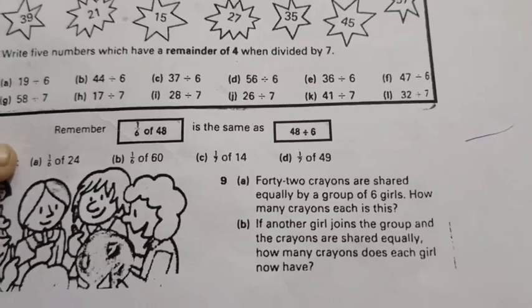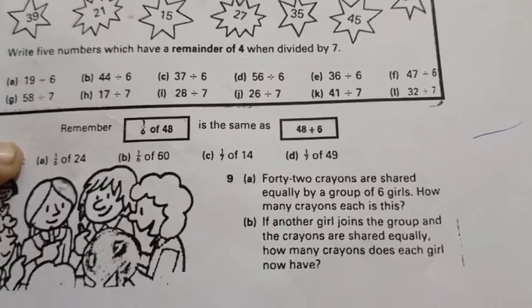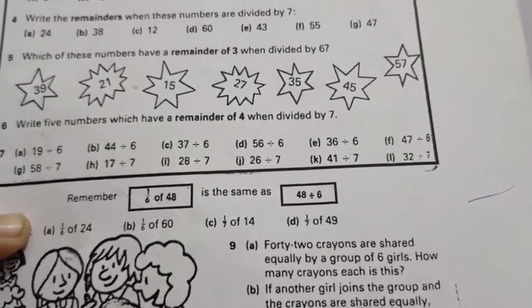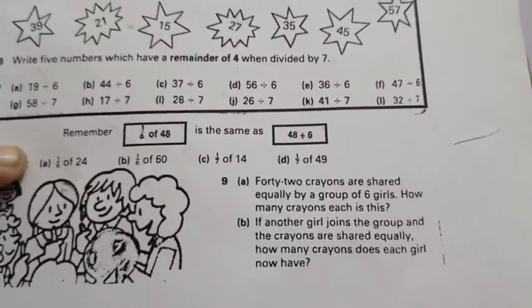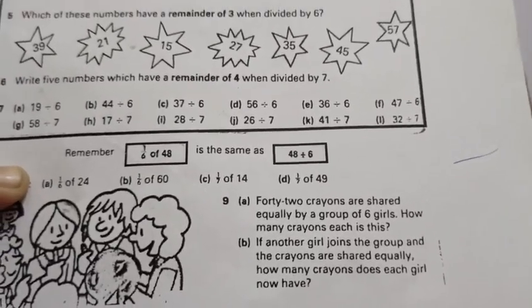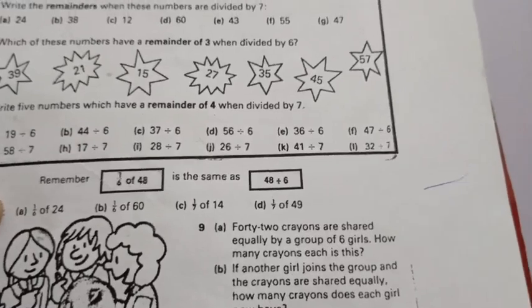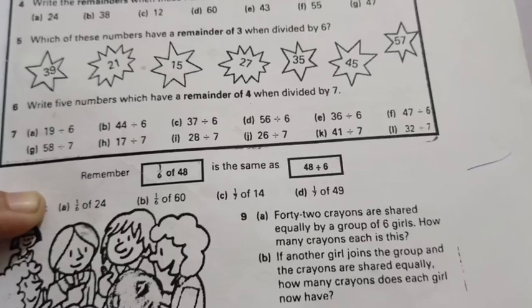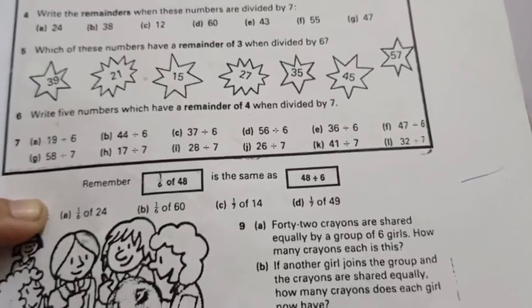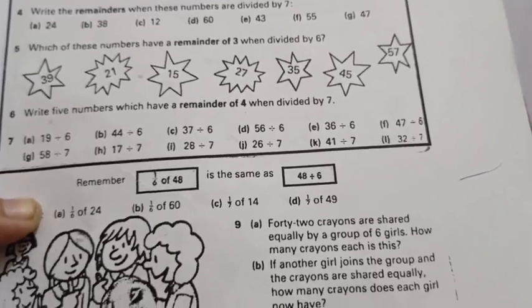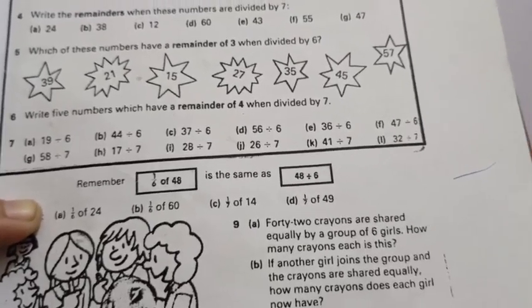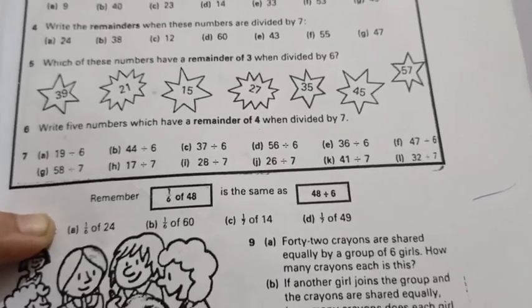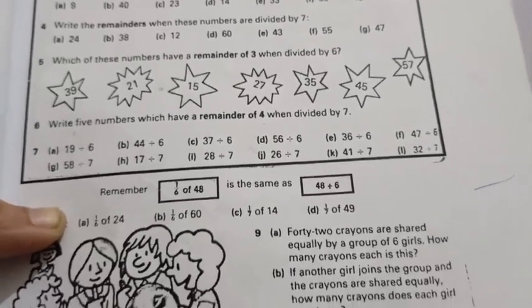It means that in a group of 6, one more girl is added. Now girls are 7 in a group and you have the same number of crayons, that is 42. Now 42 crayons have to be shared among 7 girls, so we have to divide 42 divided by 7 instead of 6.